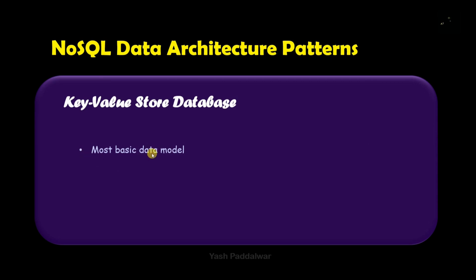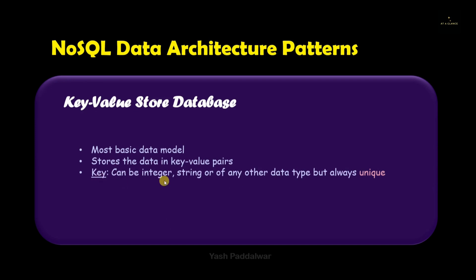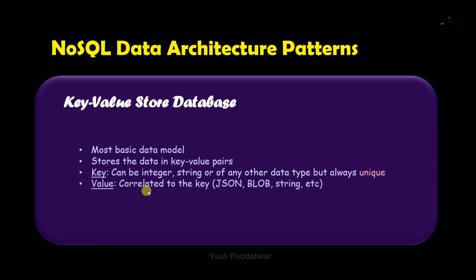This is the most basic data model of NoSQL. As the name suggests, it stores the data in the form of key-value pairs. Now what is this key? Key is nothing but a representative of a particular data value. Now this key can be any integer, string, or it can be of any other data type, but it must always be unique because this key is going to uniquely identify the data that is stored inside it. Hence key has to be unique.